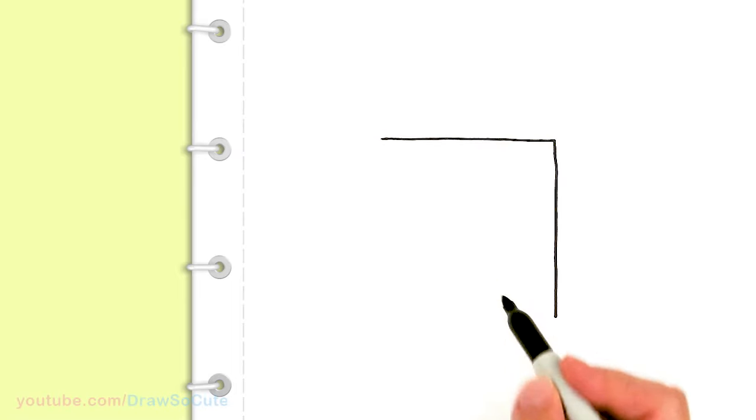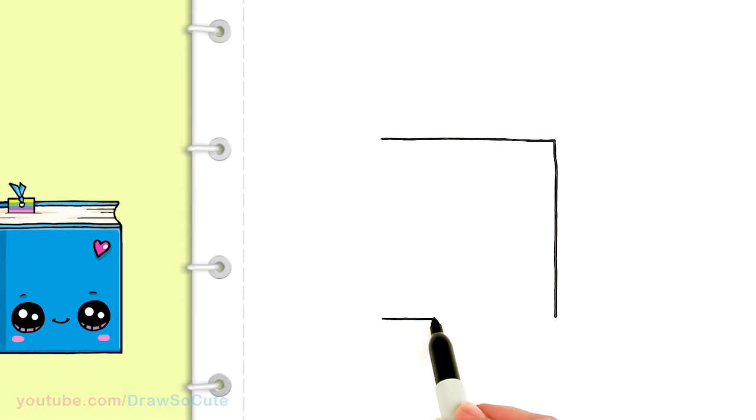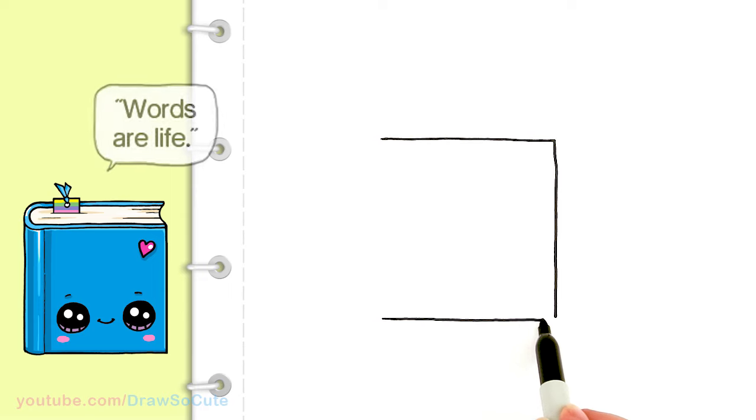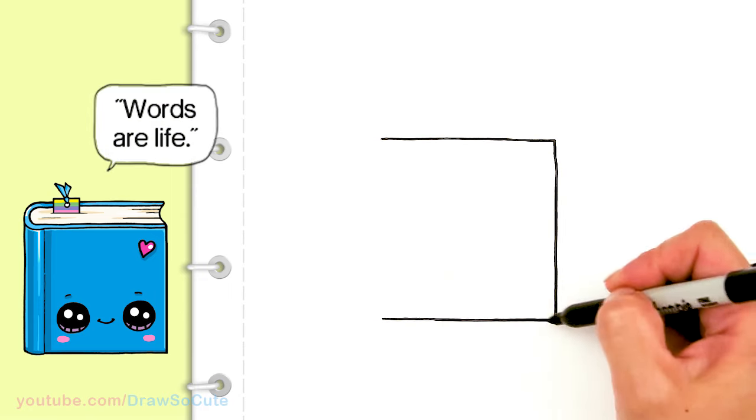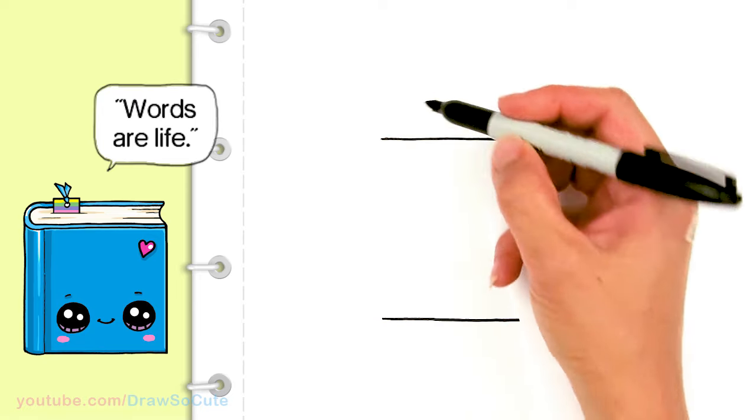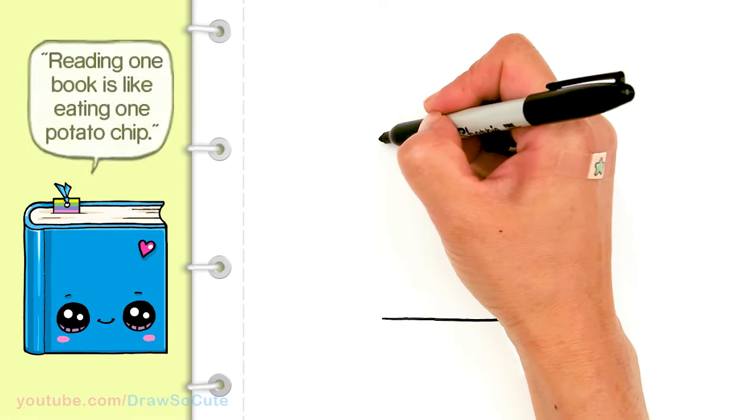And I'm going to go right across. Let's see, right here, draw a straight line across. So I basically have a rectangle in here and I'm going to leave this part open because I'm going to draw a spine for it.